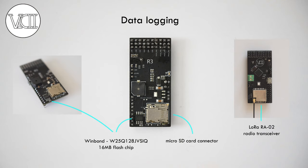We also want some way to get data about flights, and for that we have a micro SD card slot and a flash chip on the back of the computer. These two enable us to log data quickly and reliably during flight. All of the gathered data can later be used to analyze flights, and the SD card can also store flight paths and different calibration data.